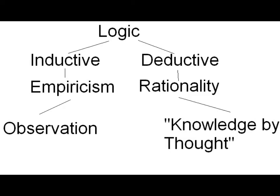Then we have deductive reasoning, which is known as rationalism, or rationality. That is your knowledge by thought — you come to a conclusion based off of something you know prior. If something is like this, then logically it would have to be this. That's basically what they're saying under that branch of logic.